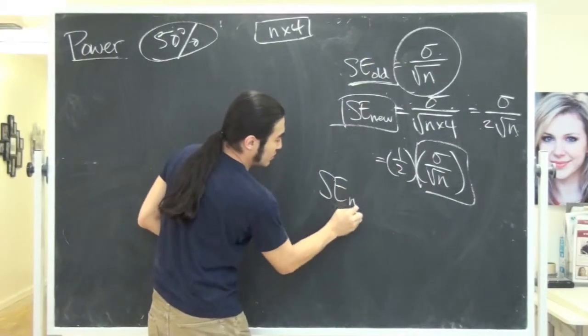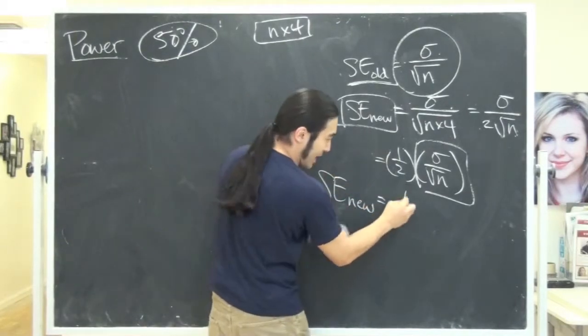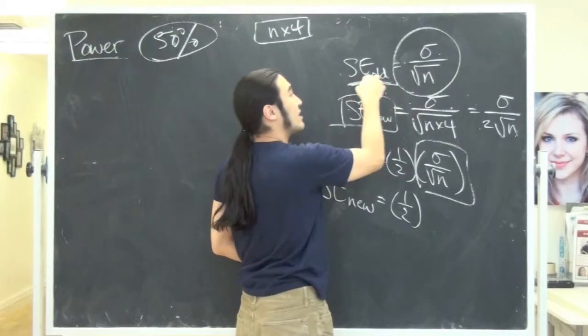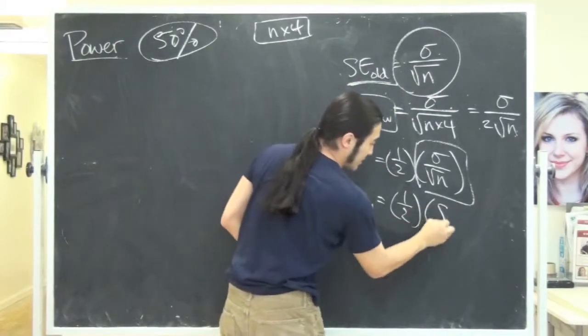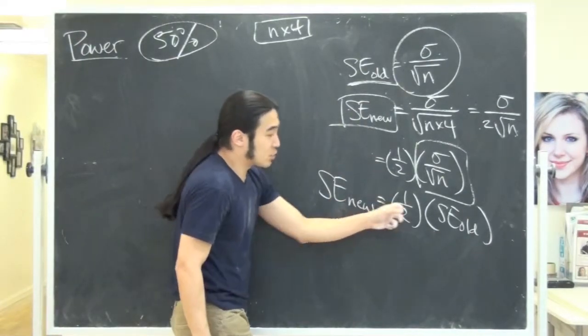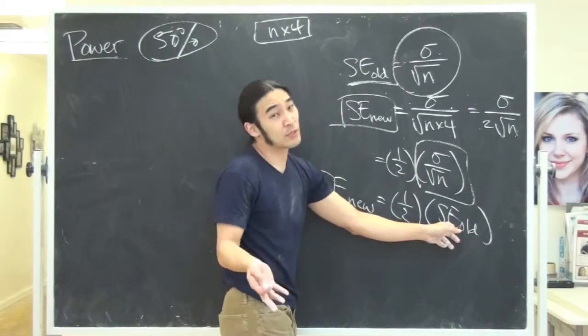So really what I'm saying is the new standard error is one half sigma over square root of n. The sigma over square root of n was the old guy. So I'm going to put this in the variable. So you can see, the new standard error is one half of the old one. Okay? Pretty straightforward.